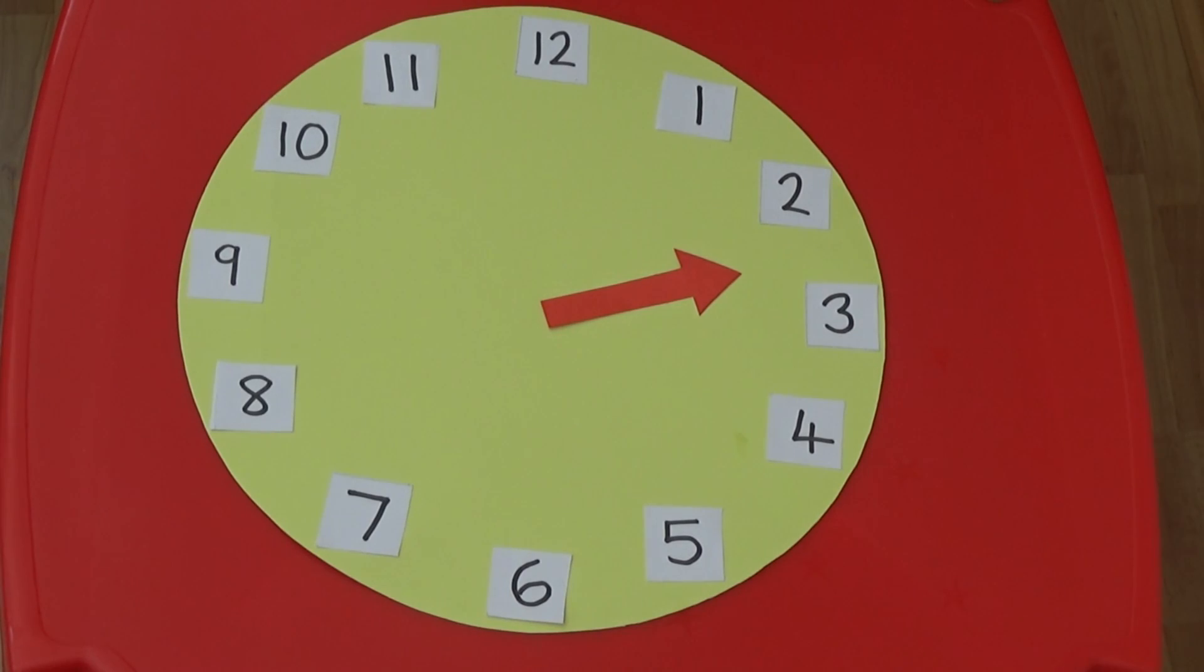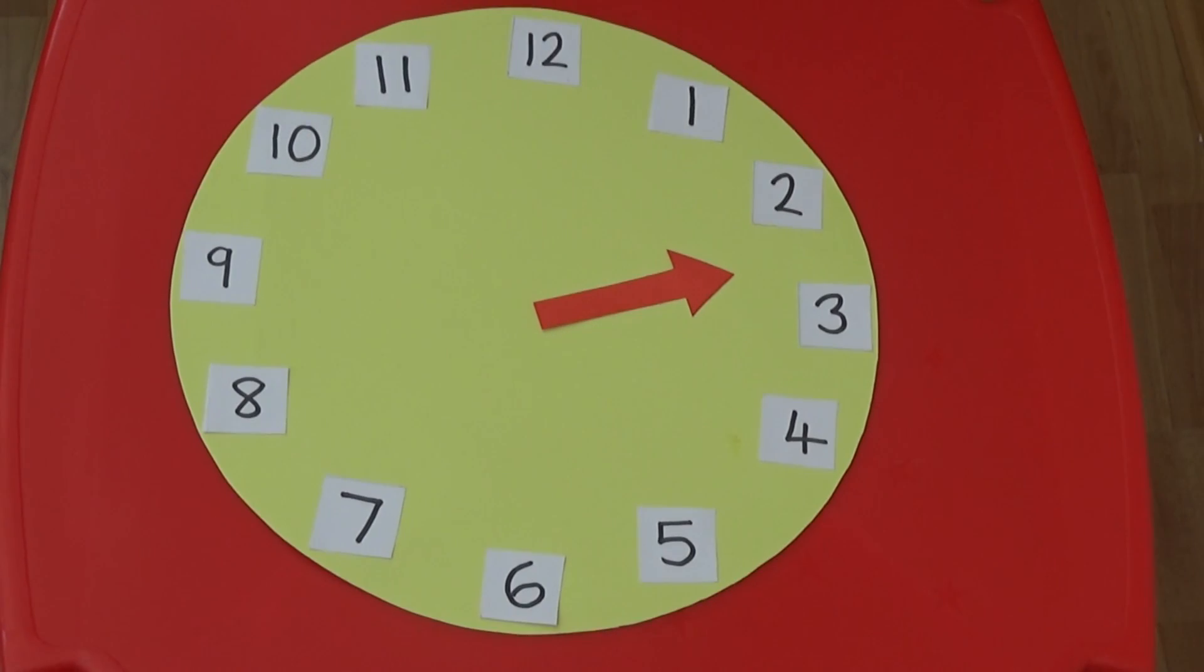We can look at this on a clock and it is exactly the same. The hand is half way between 2 and 3, so although we can't see the minute hand, we know it must be half past 2.